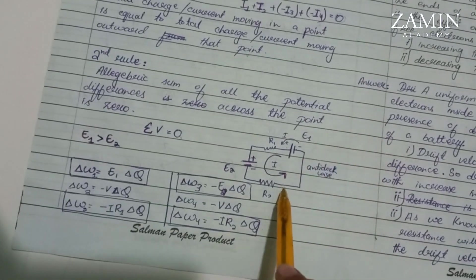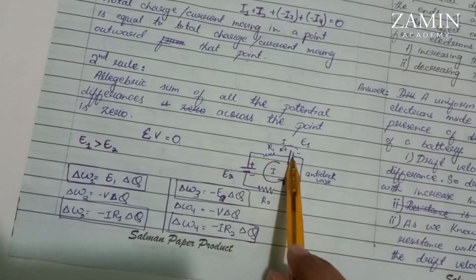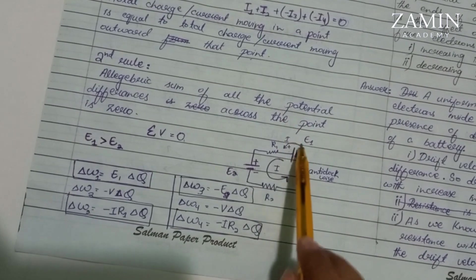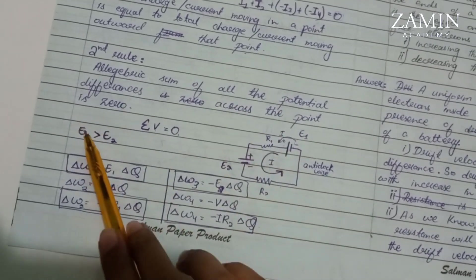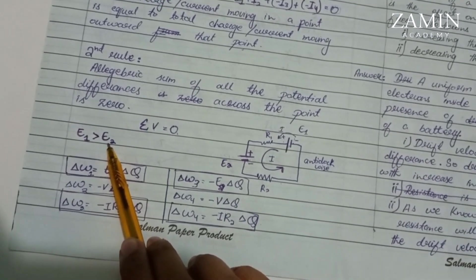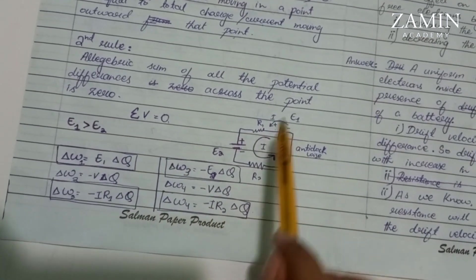Now we have made a circuit with two batteries, because we want a complex circuit. We have considered that E1 is greater than E2. E1 is greater than E2 in terms of EMF, the energy provided.